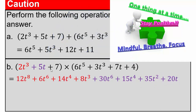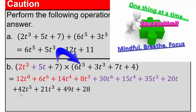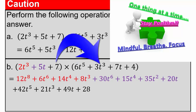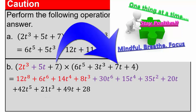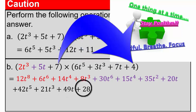Now multiply the 7 by the remaining terms — we are still using distributive property of multiplication over addition. It does not matter how many terms are in the first polynomial; you just go one term at a time and multiply it out. So 7 times 6 is 42, giving 42t to the 5th. 3 times 7 is 21, giving 21t cubed. 7 times 7 is 49, giving 49t. 7 times 4 is 28.